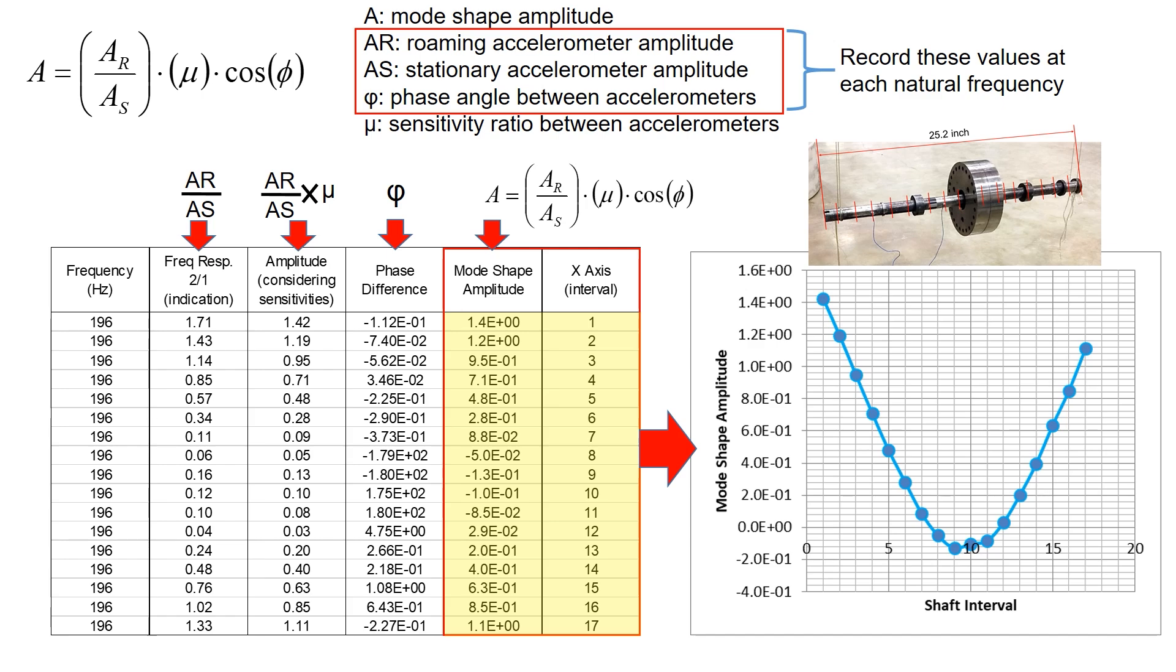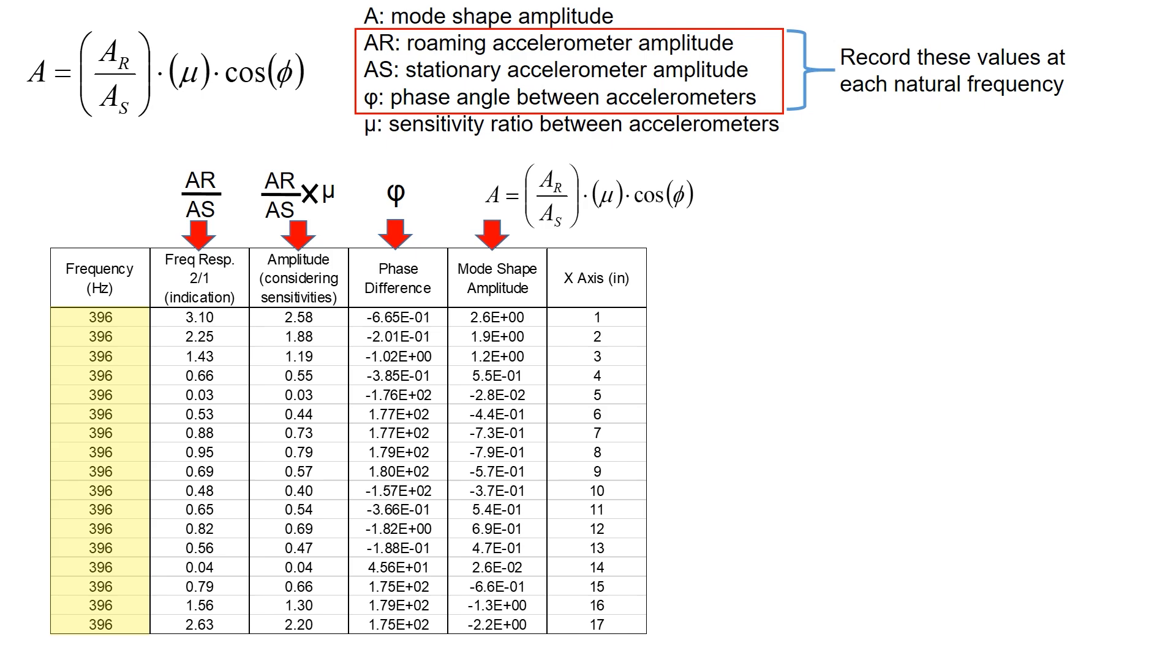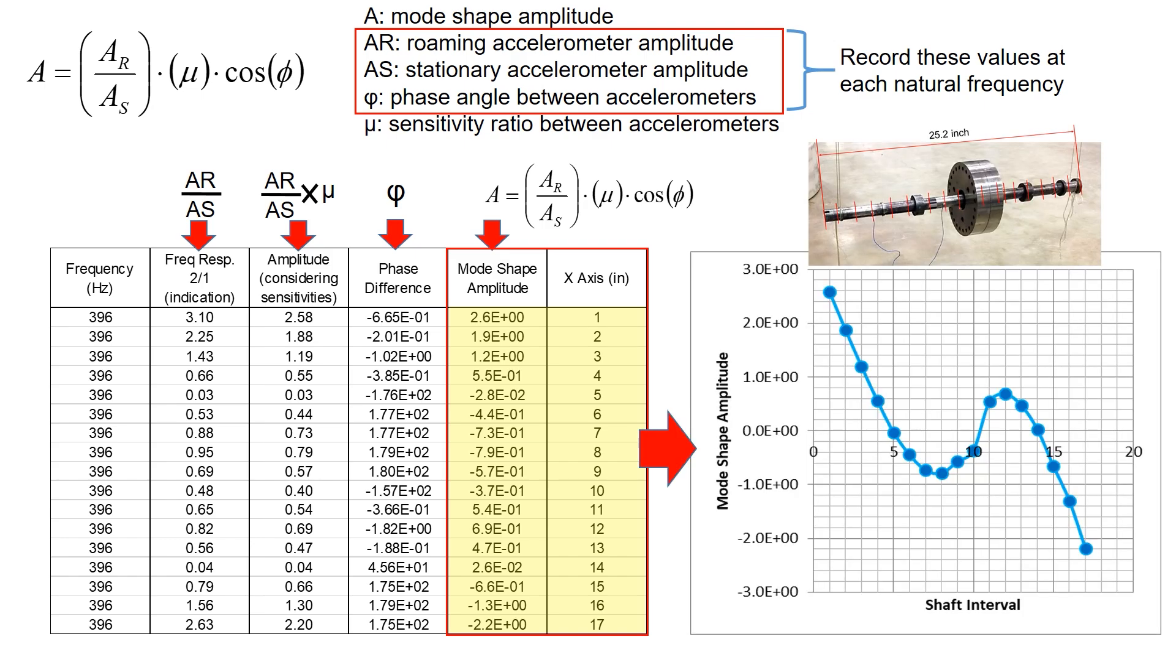Same logic applies for second natural frequency at 396 Hz. If you plot this amplitude versus the interval, you will get the mode shape for the second natural frequency at 396 Hz.